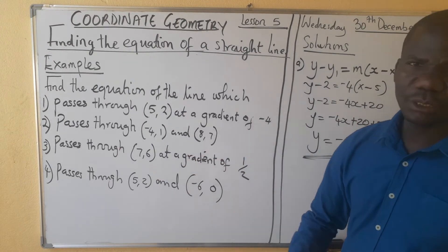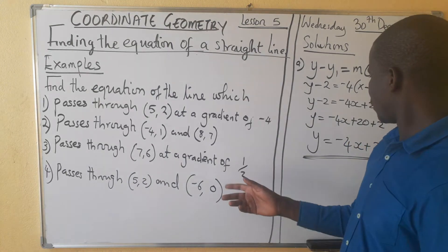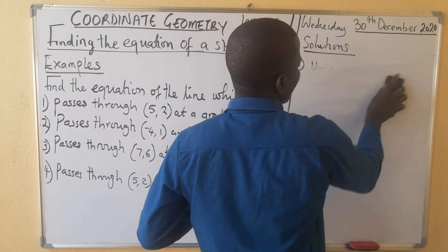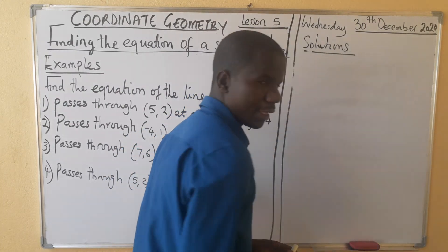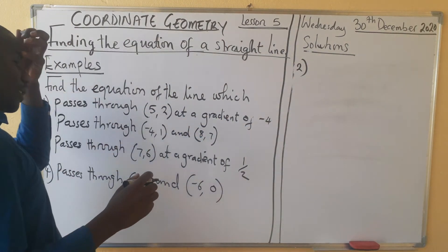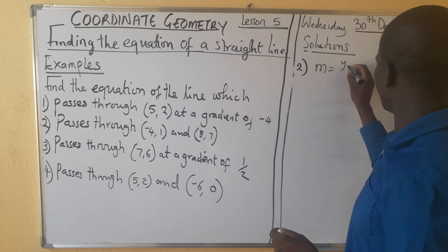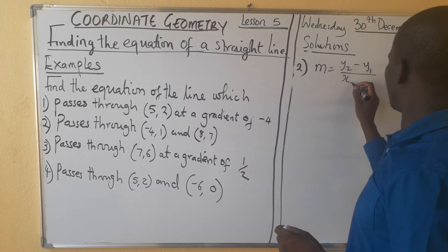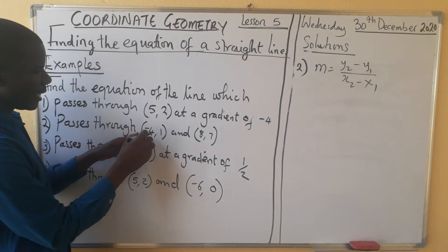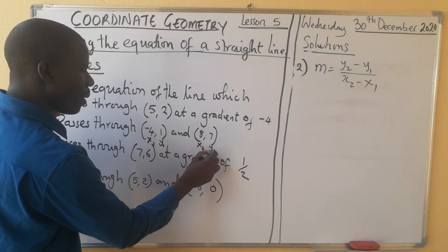In the second question, the gradient is not given but we are given two points. These two points will help us find the gradient. The gradient formula is m equals y2 minus y1 over x2 minus x1. We label the coordinates: x1, y1 from the first point and x2, y2 from the second point, then substitute into the formula.